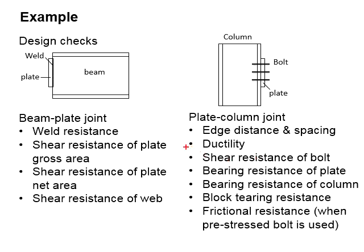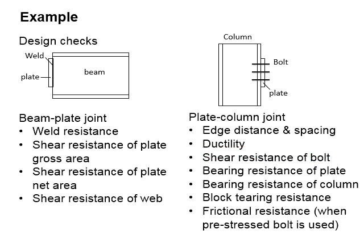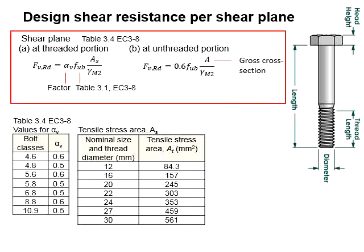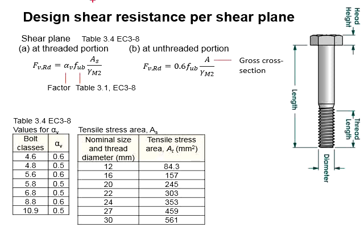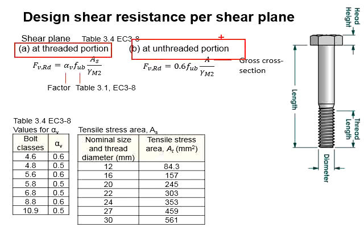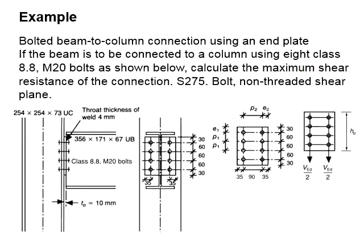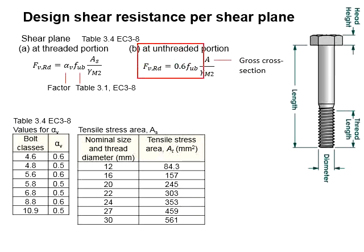Next, we need to check the shear resistance of the bolt. The formulas for the shear resistance of the bolts are given here. You will need to determine whether the shear planes are at the treated portions or at the untreated portions. Based on the question here, the shear planes are on the untreated portions. With that, you can use this formula.